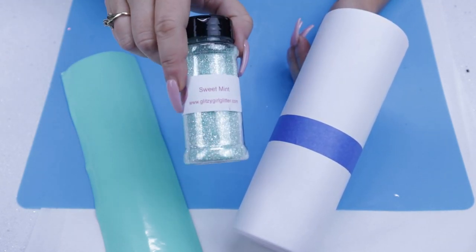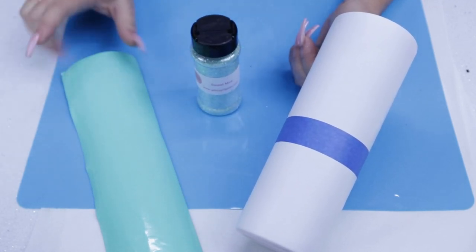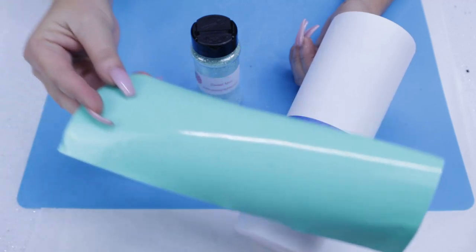We're going to use Sweet Mint Glitter from Glitzy Girl Glitter as well as the Oracle 651 Mint Color vinyl, which is also from Glitzy Girl Glitter.